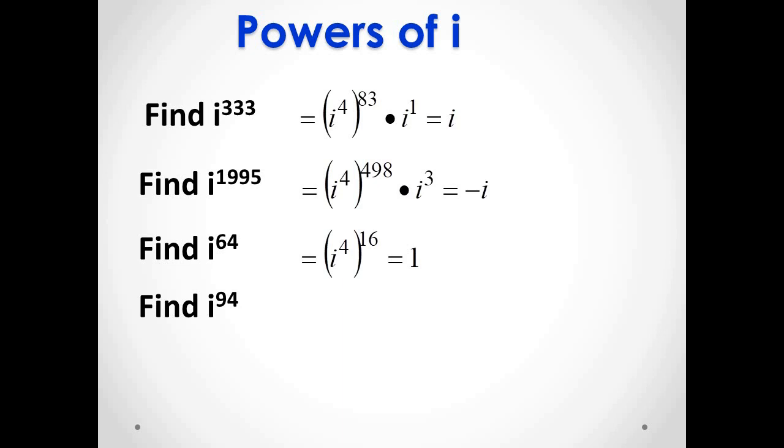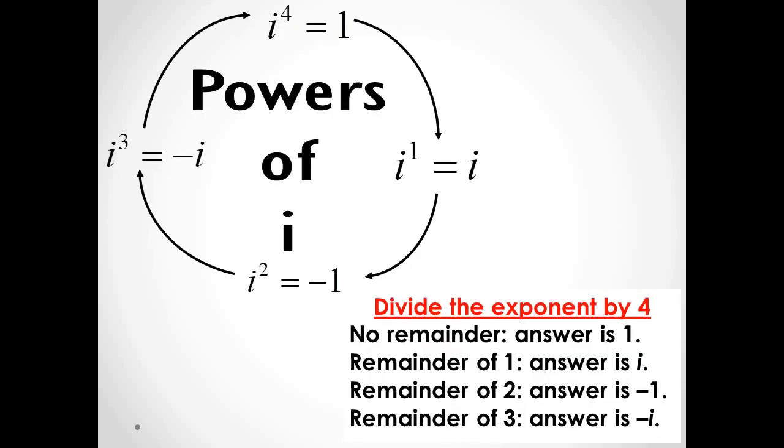Lastly, i raised to 94. This can be written as the quantity i raised to 4, raised to 23, then multiplied by i raised to 2. Notice again that i raised to 4 is just equal to 1. So if we raise this again to 23, it will just remain 1. And 1 times negative 1 equals just negative 1.